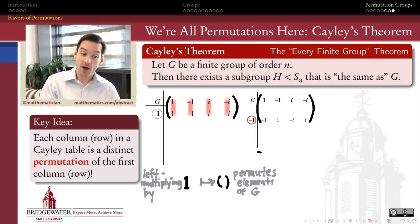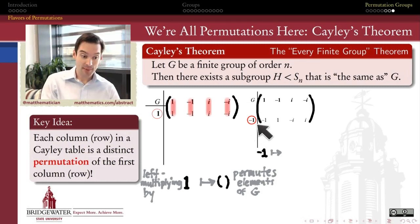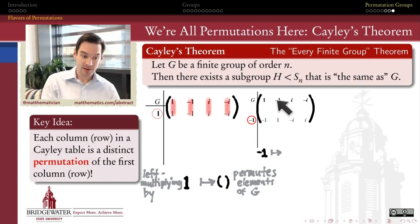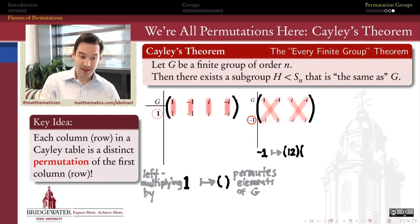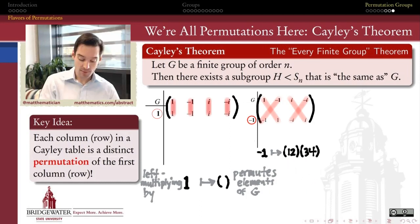We can do that same process for the other elements of the group as well. What happens when I left multiply by negative 1? I'm going to get a permutation that sends this element into that position. Negative 1 times 1 gives me negative 1; negative 1 times negative 1 gives me 1. So when I multiply by negative 1, these two elements trade places with one another. Same thing with i and minus i — they trade places when I multiply by minus 1. So the permutation I get there has cycle notation (1 2)(3 4). That permutation now stands in for multiplication by negative 1.